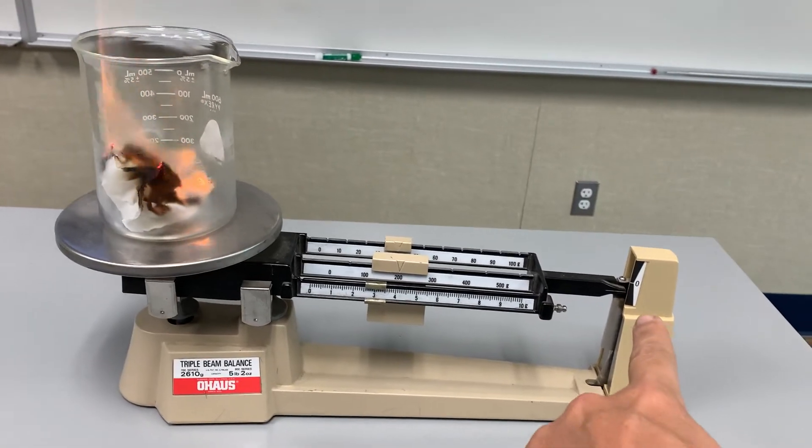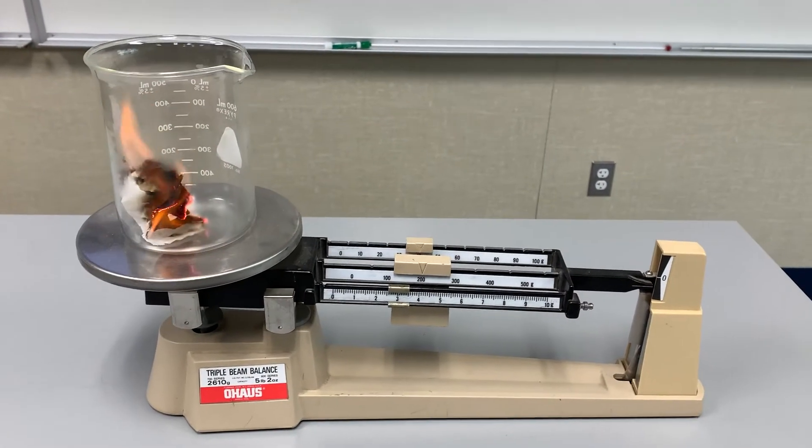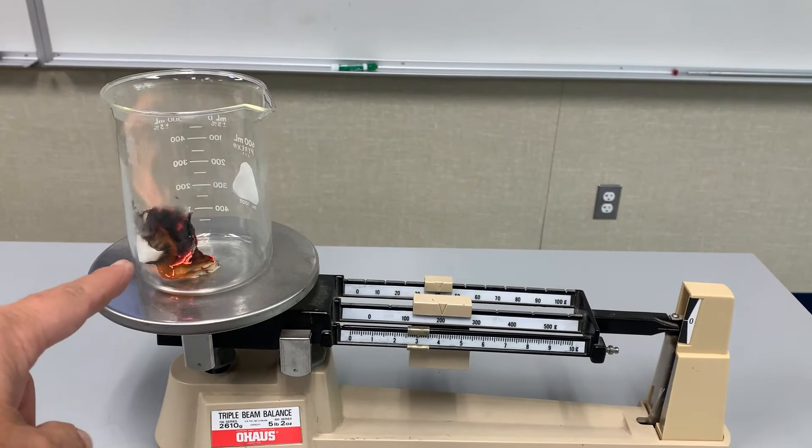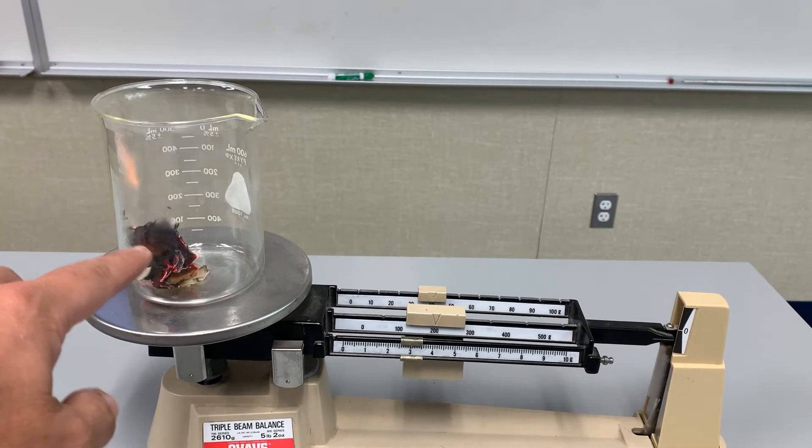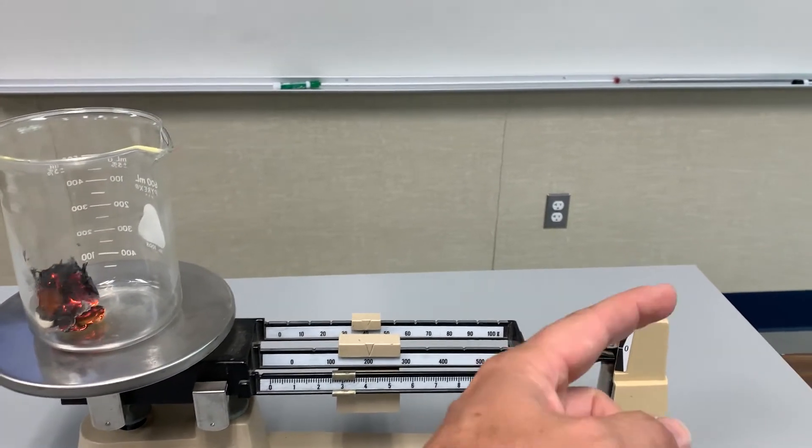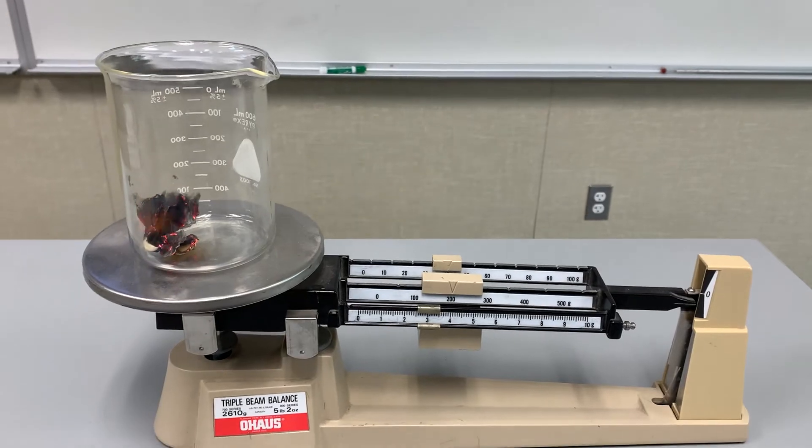You can see clearly it's dropping right there, which means that this side is getting lighter. If this side were getting heavier, the balance would go up. You can see clearly the balance has dropped.